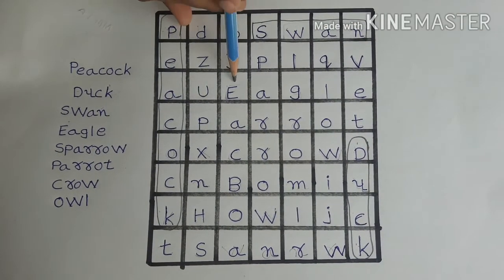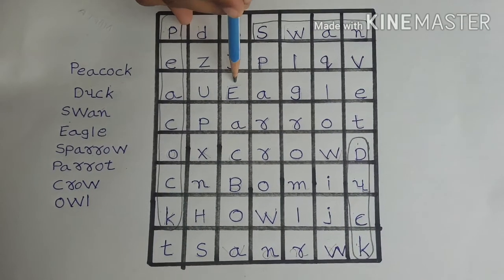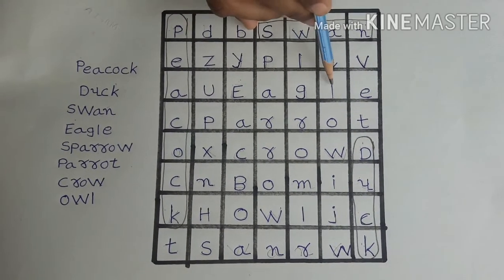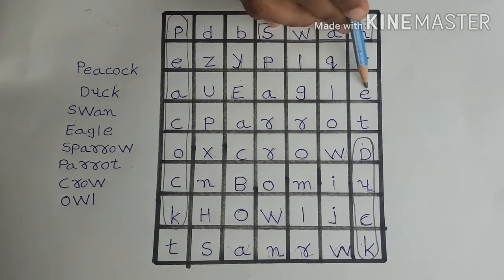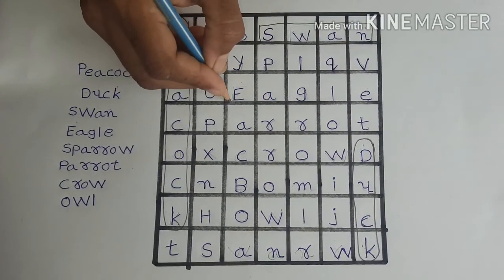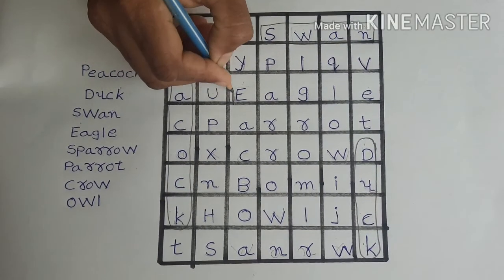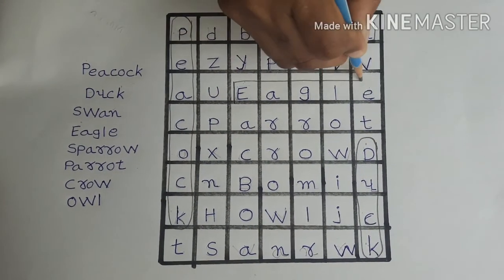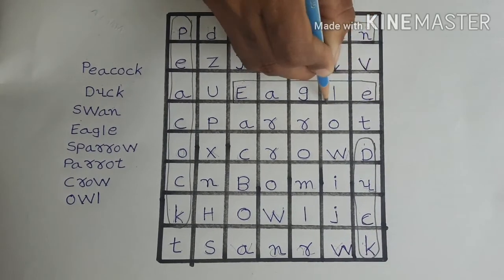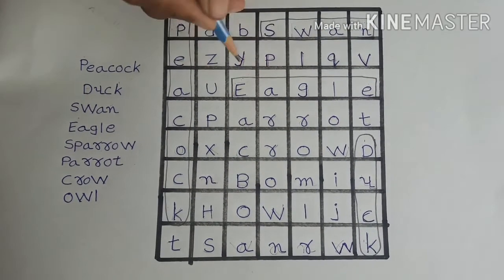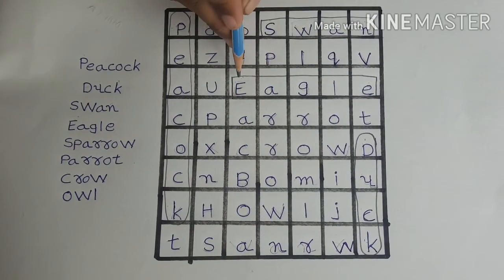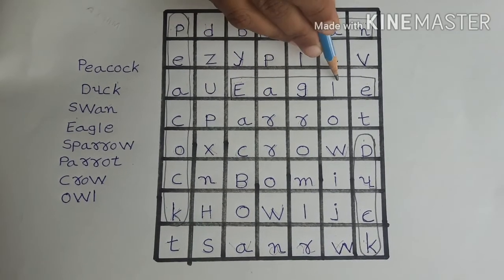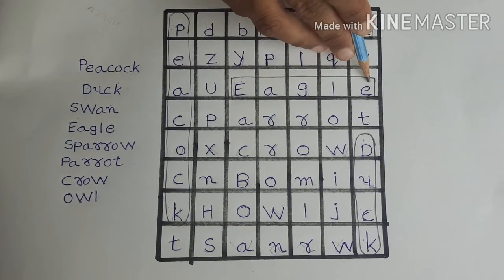See, in the third line there it is — E-A-G-L-E. Eagle. Let's circle it. Friends, let's say the eagle spelling once more: E-A-G-L-E. Eagle.